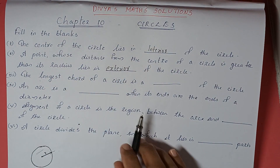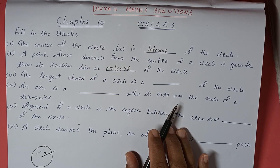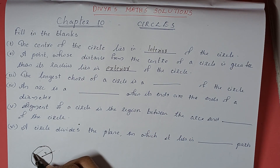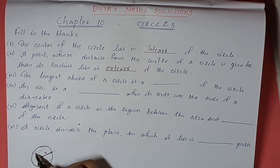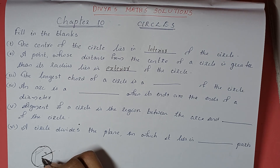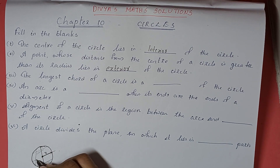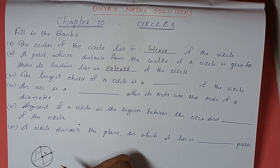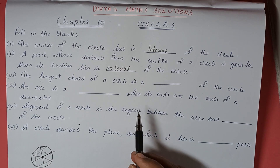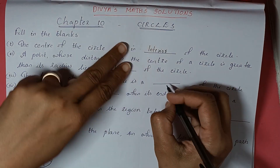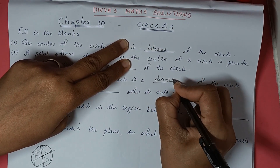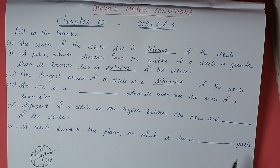Next: the longest chord of the circle is a dash of the circle. A chord means joining any two endpoints on the circle. But which one is the longest chord? The longest chord passes through the center. So the longest chord of the circle is the diameter of the circle.